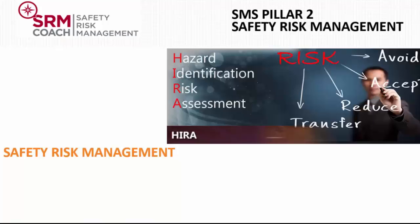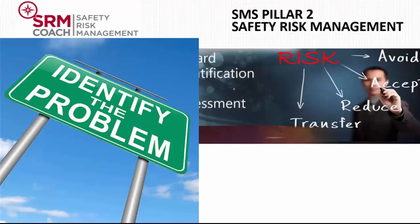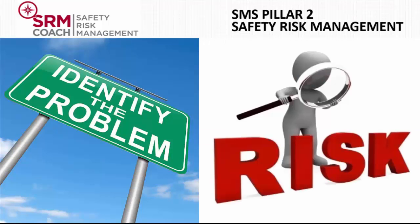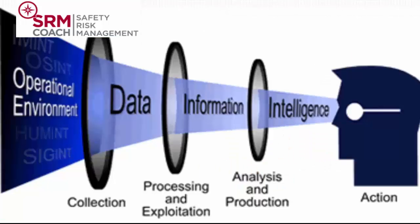The second pillar of our SMS is actually the most important activity. Since we will discuss this in depth in our advanced SMS course, this online course will not dedicate much time to it. The safety risk management activity helps us to answer the question: what will cause our next accident or incident, and how do we know about our risks? The hazard identification and risk assessment processes help us to gather safety data and convert it into useful safety intelligence, which helps us to make risk-based decisions. The output of these activities are safety recommendations, which tell us how to reduce safety risk.